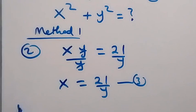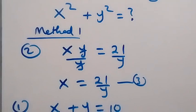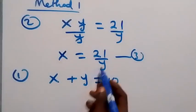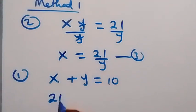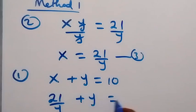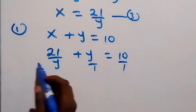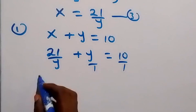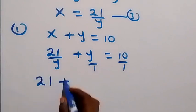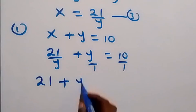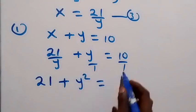From equation 1 we have x plus y equals to 10. We substitute the value of x to be 21 over y, so 21 over y plus y equals to 10. Multiplying through by y gives 21 plus y squared equals to 10y.